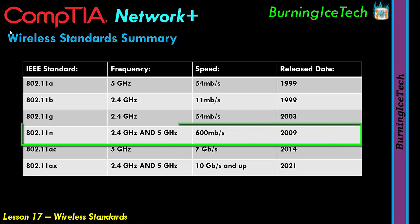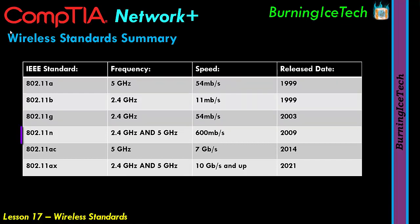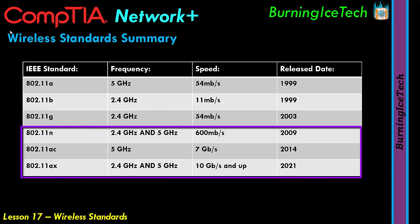The 802.11n standard has generally been used by companies to connect their offices and branches wirelessly over distances. This is changing with the newer AC and AX standards becoming more common for connecting buildings over great distances and speeds. The N standard is useful over great distances at decent speeds, but the downside is it needs line of sight. The older top three standards don't require line of sight, but the faster newer bottom three standards do.